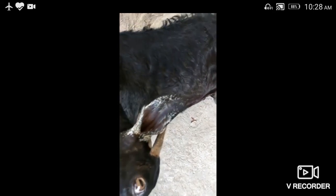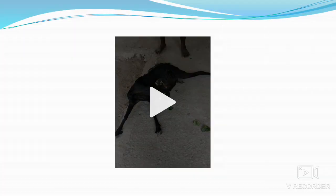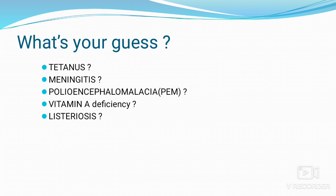The animal is showing staggering and opisthotonus; feeding behavior is normal. It also showed other signs like tremors, ataxia, blindness, and circling. An important clue: all the vital signs are normal. These normal vital signs help differentiate PEM from other diseases which produce similar clinical signs.